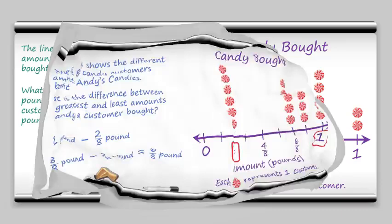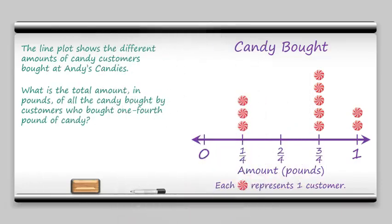Okay, let's try another example. Here we want to know the total amount of all the candy bought by customers who bought one-fourth pound of candy. Well let's look above one-fourth and find the number of customers. That's three.